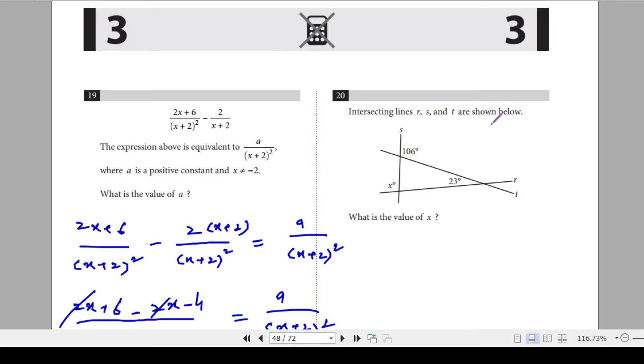Question 20. Intersecting lines r, s, and t are shown. What is the value of x? Alright, we need to find this. So these two angles are supplementary angles, 180 degrees. So if this is 106, this must be 180 minus 106. That is 74. So this angle here is 74.